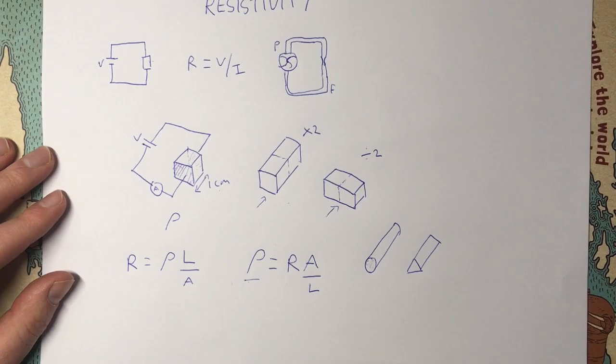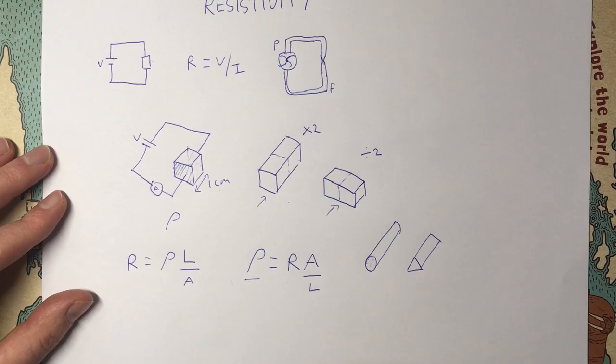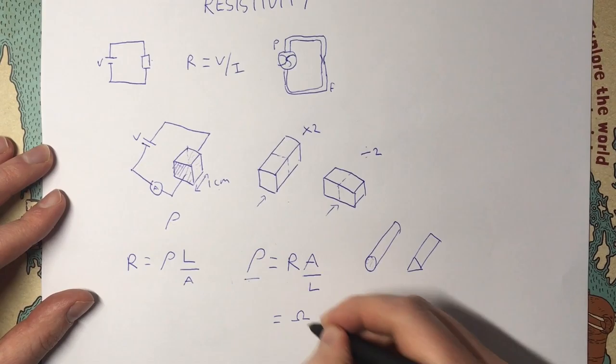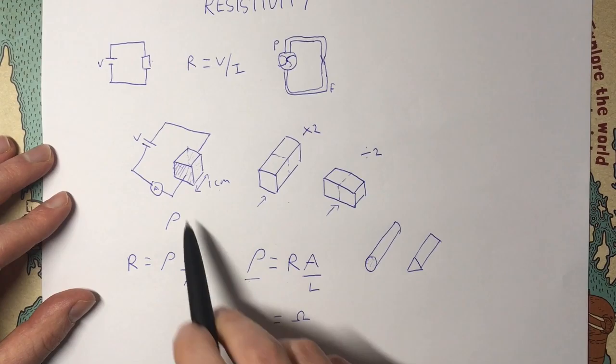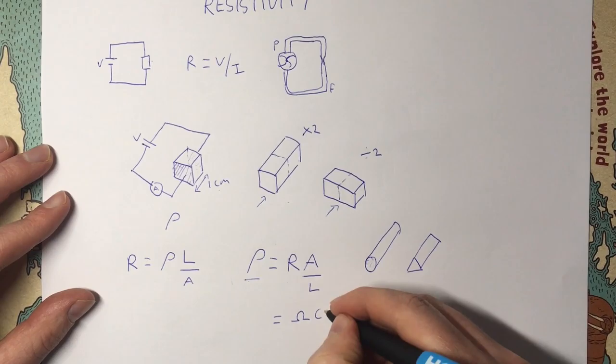What about the units? Units are important, so let's do a unit analysis of resistivity. Taking our equation ρ = R × A / L and plugging in units: resistance is in ohms, area is in centimetres squared, and length is in centimetres — and it's usual to use centimetres rather than metres. So centimetres squared divided by centimetres gives centimetres, meaning resistivity has units of ohm·centimetres (Ω·cm).